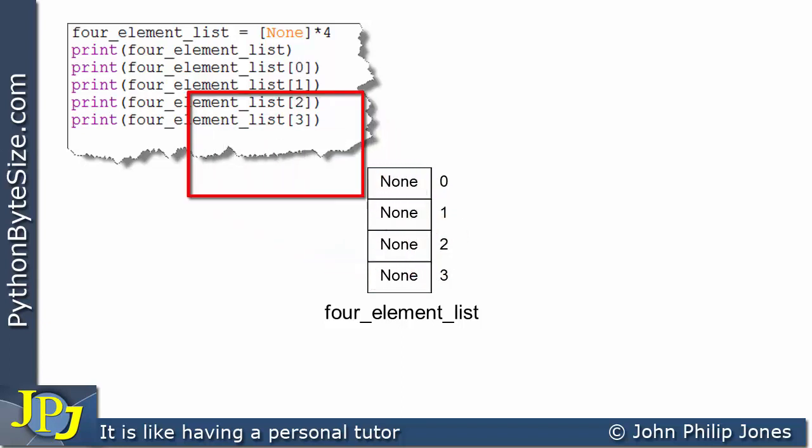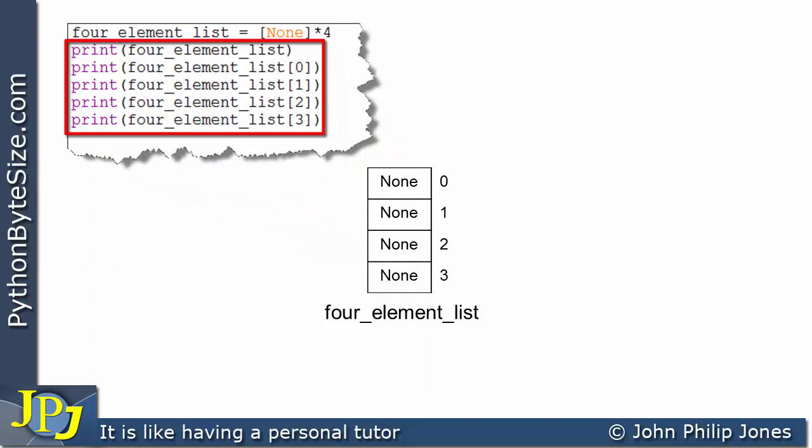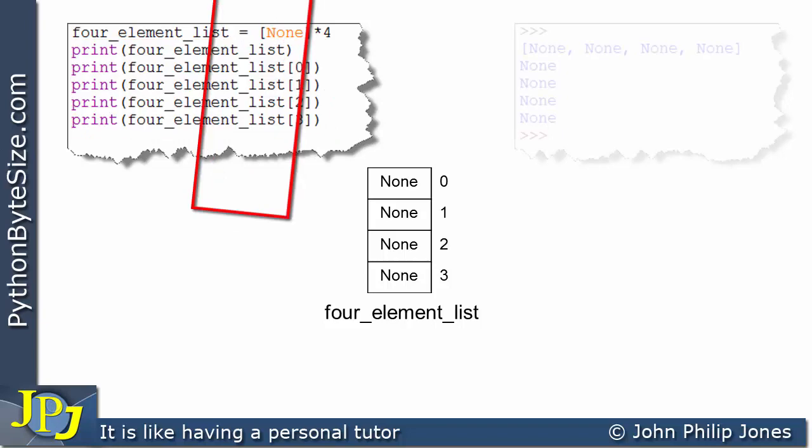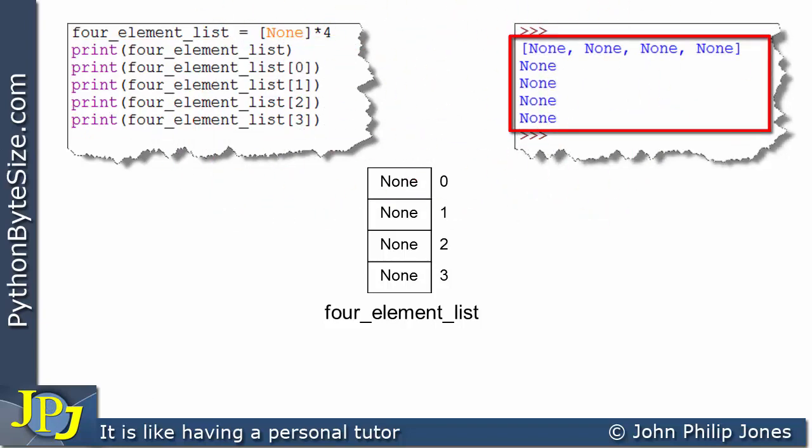Now when I then look at these print statements, what they're going to do is print what is within the list, as they've done in the previous two programs we've looked at in this video. And what we can expect to see is this. You can see that's the list in its entirety. And these here are the outputs from each of the elements in turn.